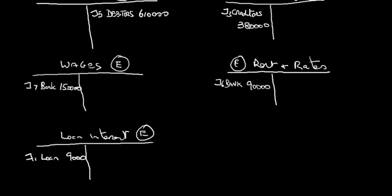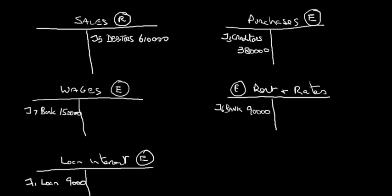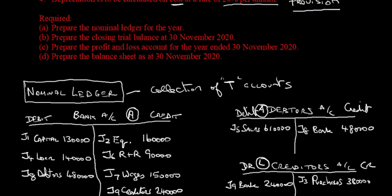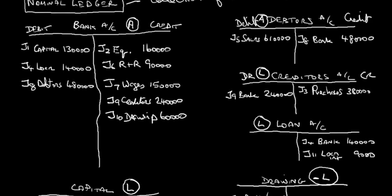Transaction 12 (J12): Loan repayment £20,000. This is a cash payment. Two accounts: bank (asset — decreases, credit) and loan (liability — decreases, debit). Debit loan account 'Bank 20,000' and credit bank account 'Loan 20,000'. All twelve transactions are now posted to the nominal ledger.